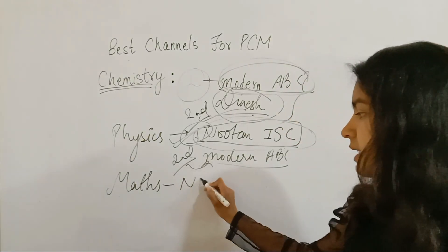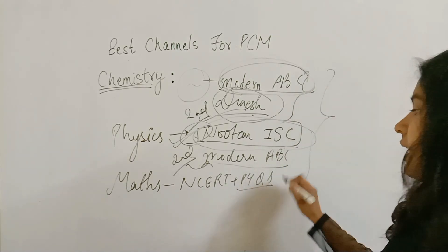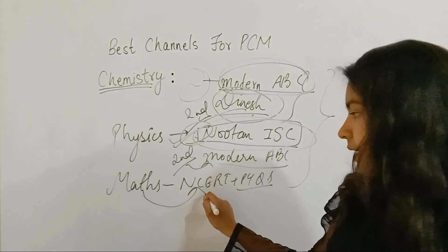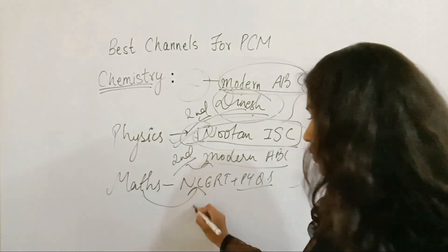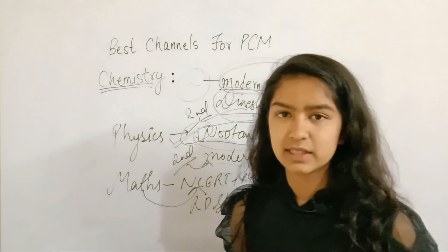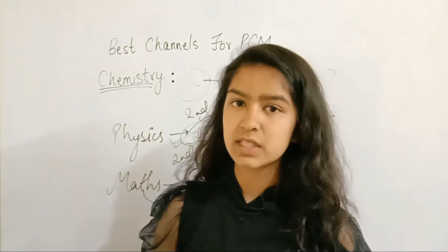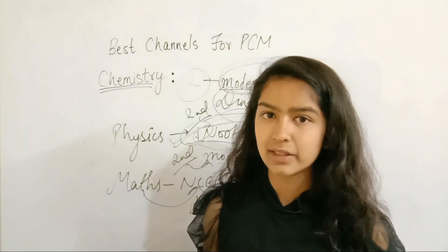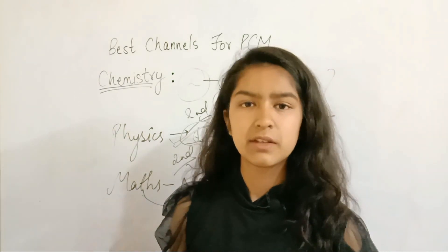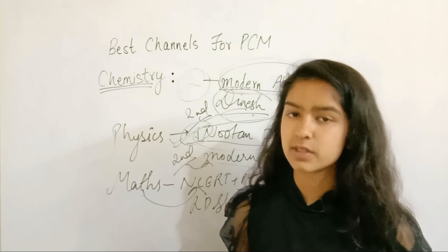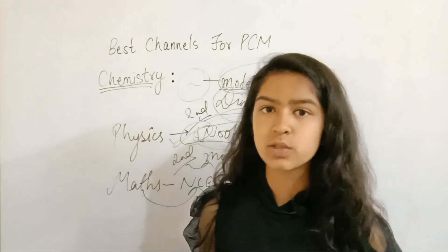For maths, I prefer NCERT plus the previous year question papers — that is enough for scoring 90 plus. If you are preparing for competitive exams, you should definitely go for RD Sharma. I shifted from CBSE to UK board in class 12th and the pattern was fully based on NCERT, so NCERT was definitely enough for scoring even 100. In CBSE there is a higher level, so you can practice RD Sharma too.